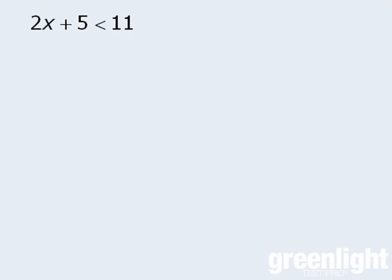Solving this inequality means finding all values for x that make the inequality a true statement. To do this, we need to isolate the variable x. We'll first subtract 5 from both sides to get 2x is less than 6, and then divide both sides by 2 to get x is less than 3. This means the solution to 2x + 5 < 11 consists of any value of x that is less than 3. There are infinitely many solutions to this inequality.